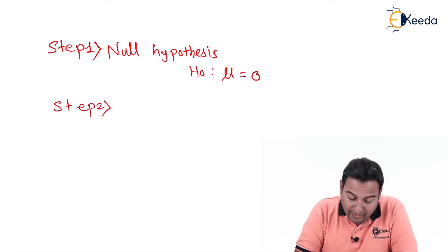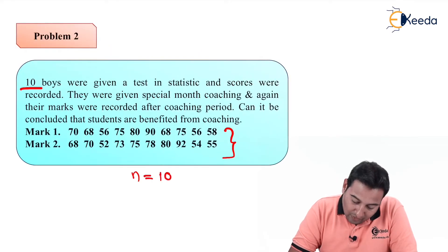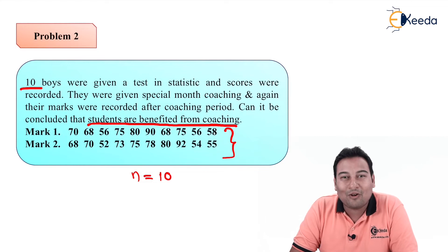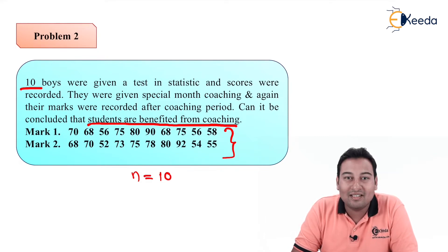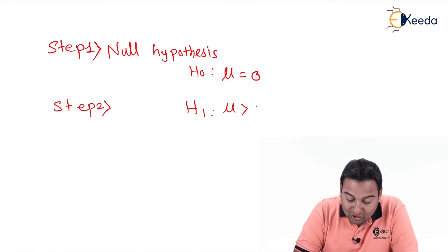Step number two is the alternate hypothesis, H1. There are three options: not equal to, less than, or greater than. In the given problem it is asked whether the students are benefited from coaching or not. When will there be benefit? Obviously when the marks increase. So in alternate hypothesis it will be greater than zero, we're assuming there is an increase in the marks.